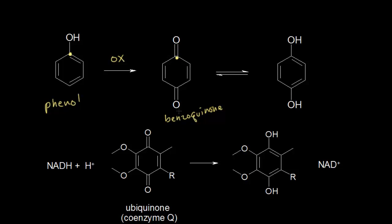Once you make benzoquinone, you could reduce that to this molecule over here on the right, which is called hydroquinone. There are several organic reagents that can reduce benzoquinone to hydroquinone. And from hydroquinone, you could oxidize hydroquinone back to benzoquinone pretty easily. In organic chemistry there are lots of reagents that can do these redox conversions, but in the body you're usually talking about the NAD+/NADH system, which we've just studied.